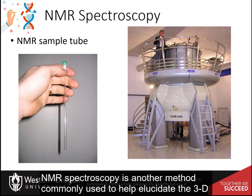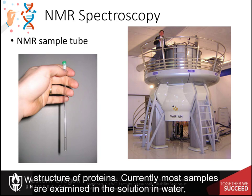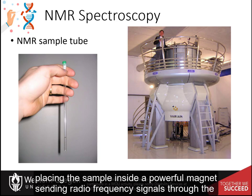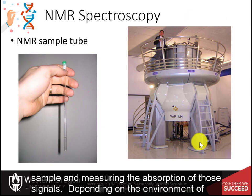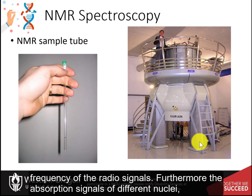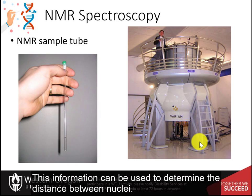NMR spectroscopy is another method commonly used to help elucidate the 3D structure of proteins. Currently, most samples are examined in a solution in water, but methods are being developed to also work with solid samples. Data collection relies on placing the sample inside a powerful magnet, sending radio frequency signals through the sample, and measuring the absorption of those signals. Depending on the environment of atoms within the protein, the nuclei of individual atoms will absorb different frequencies of the radio signals.